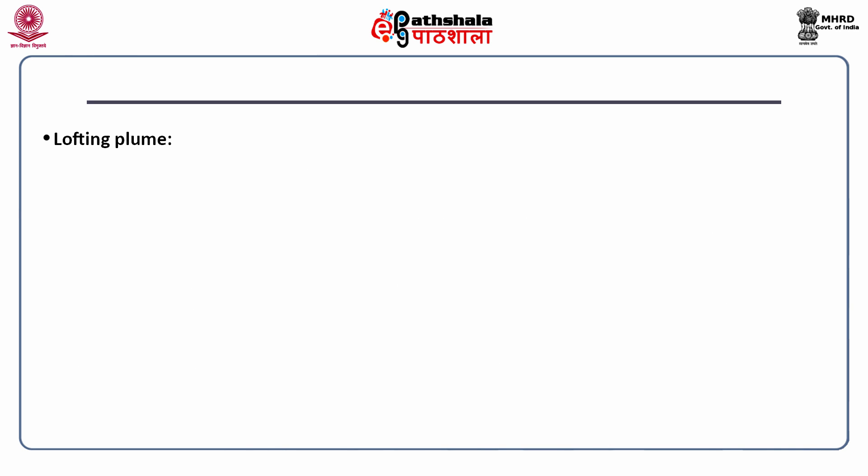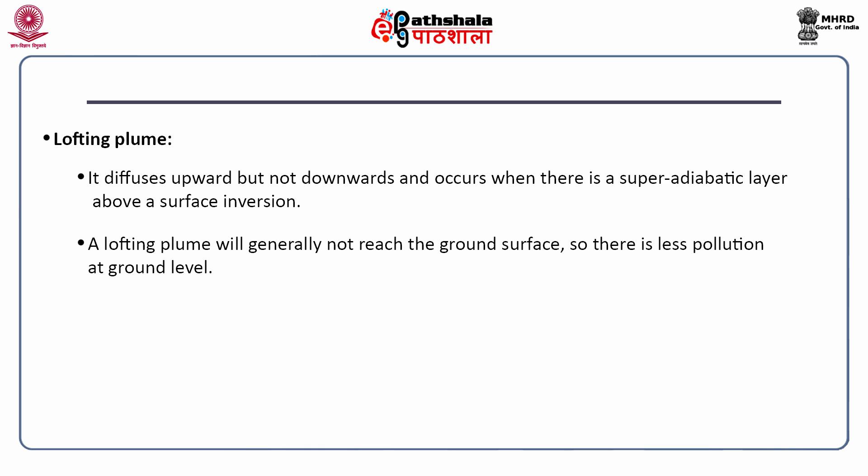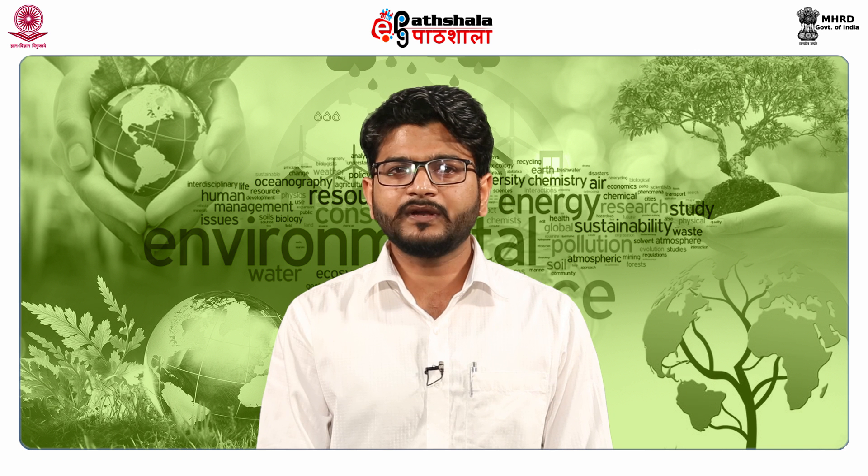The fifth one is lofting plume. It diffuses upward but not downward and occurs when there is a super-adiabatic layer above a surface inversion. A lofting plume will generally not reach the ground surface, so there is less pollution at ground level. The last one is trapping, which is a condition accompanied by a weak lapse below inversion aloft.